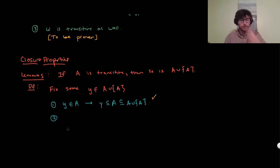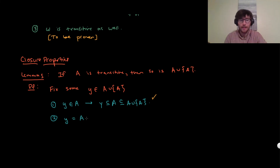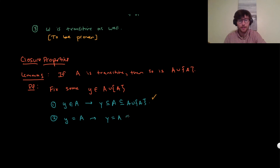Case two: Y is equal to A. Then Y = A is a subset of A ∪ {A}, which is also exactly what we wanted to show. So we've proved that if we have a transitive set and we add one to it — include the set A itself — we still get a transitive set.